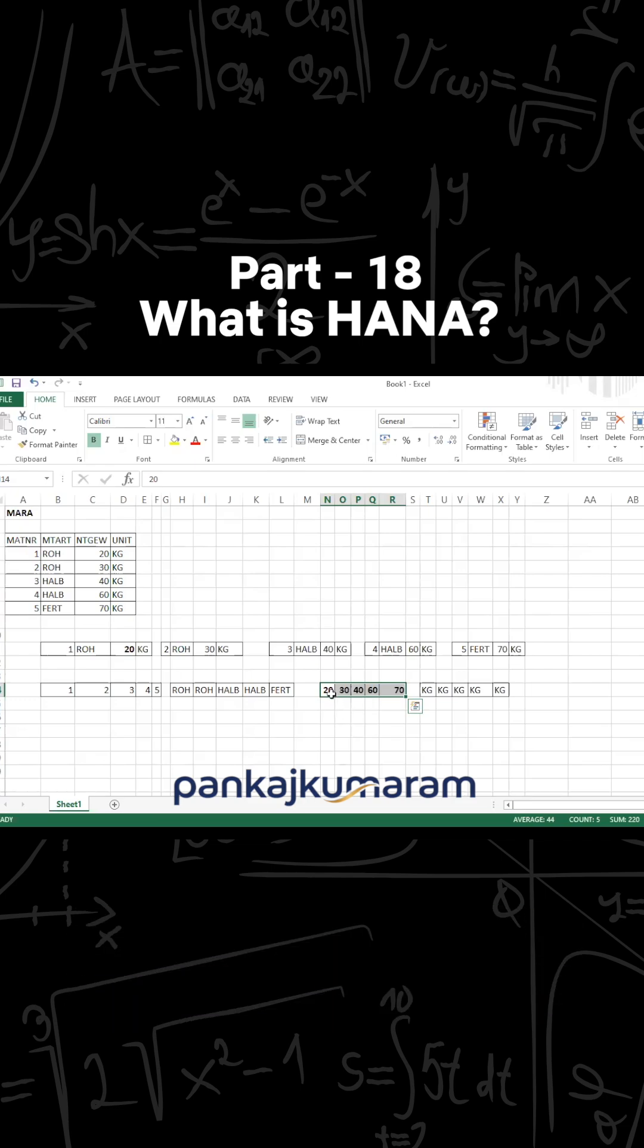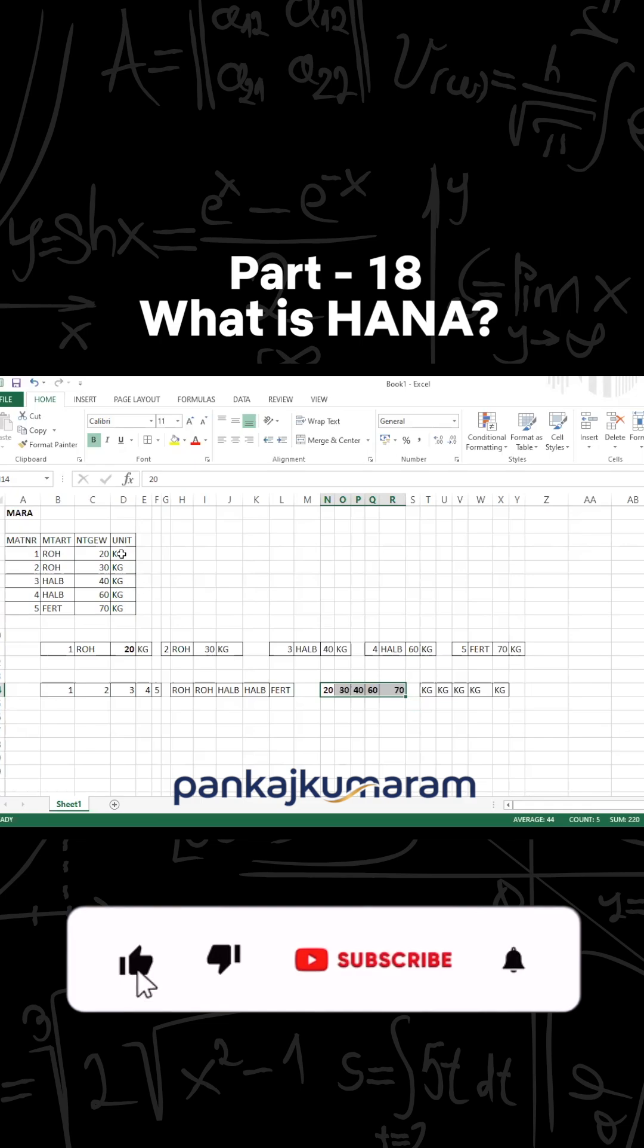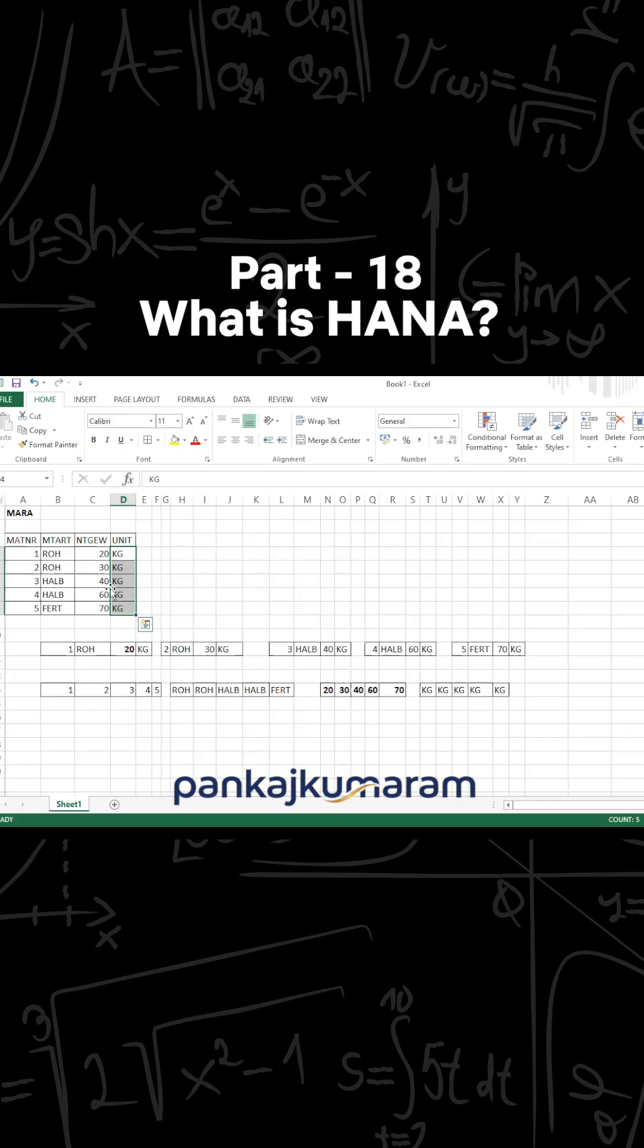Second point: here you can see that multiple duplicate fields are here - kg, kg, kg, kg, and Roh, Roh, Halb, Halb. So these are different fields which we are having. These fields can be compressed together if it is in column storage format.